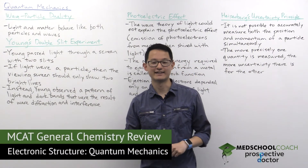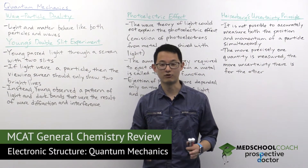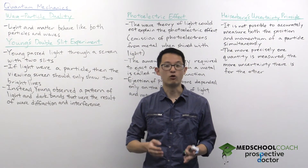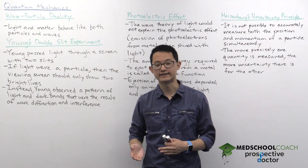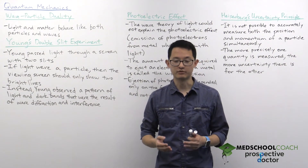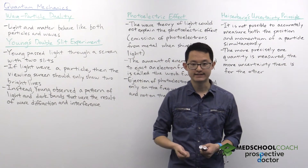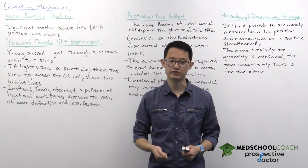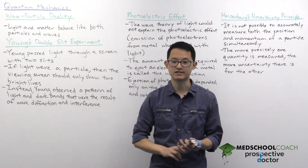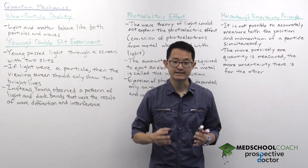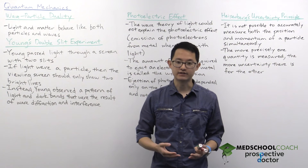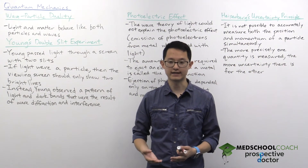To continue our discussion on electronic structure, let's talk about quantum mechanics. Quantum mechanics is a theory of physics that was developed in the 1900s. All the physics before the 1900s is what we call classical mechanics. The reason why quantum mechanics was developed was because technology had improved such that we were able to do experiments at smaller, microscopic levels, looking at atoms and subatomic particles, and the results of these experiments could not be explained using classical mechanics.